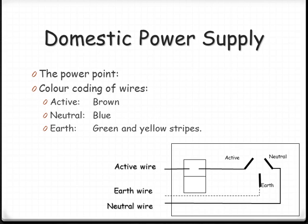And then just looking at our standard power point, we've got our active, we've got our neutral, we've got our earth and the active is the one that is on the switch. If you actually look at the wires, I believe the current color coding system is brown for active, blue for neutral and green and yellow stripes for the earth wire.